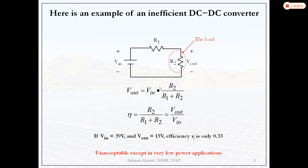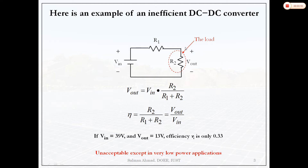We can also step down voltage by connecting a resistor divider. The current is Vin/(R1+R2), and output voltage is Vin × R2/(R1+R2). By changing the resistance we can change output voltage, but the efficiency will be R2/(R1+R2) or Vout/Vin. For example, if we require 13 volts output from 39 volts input, efficiency is 1/3 or 33%, which is very poor.